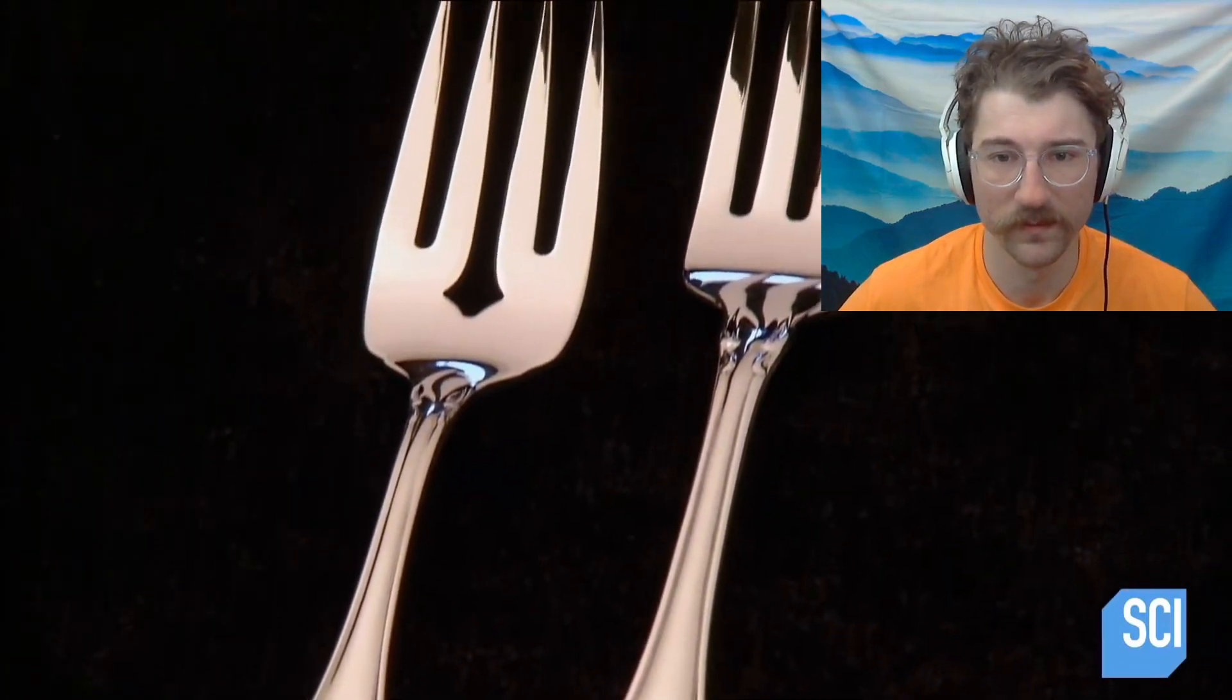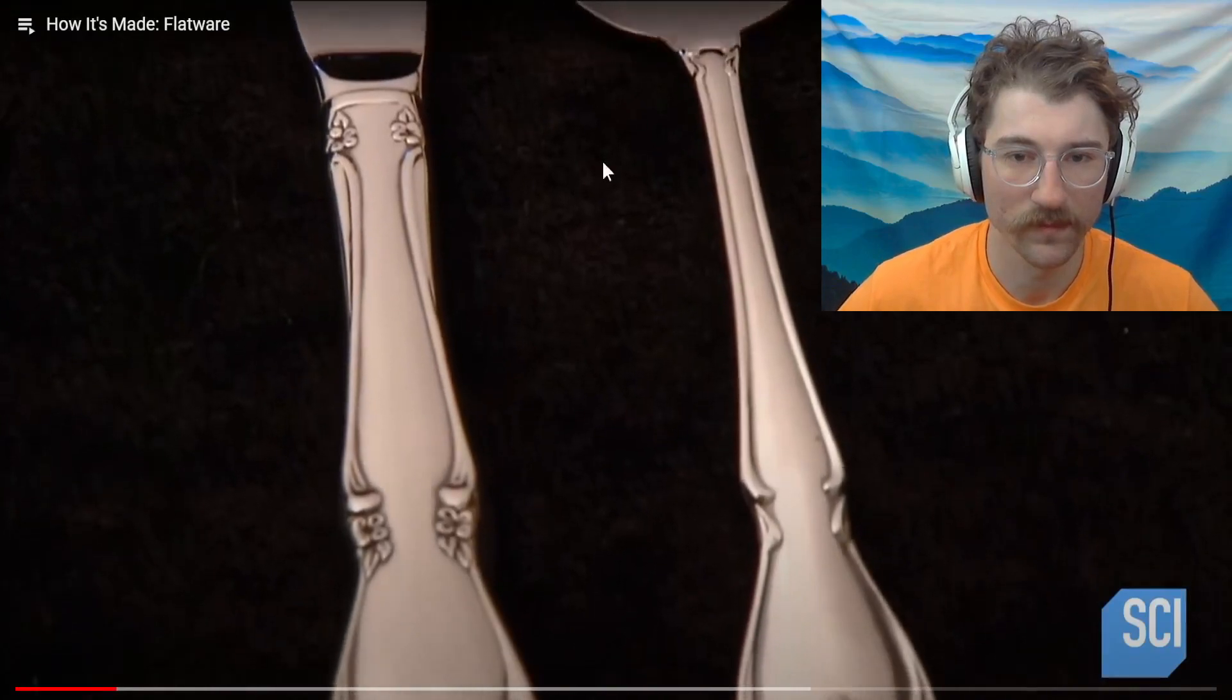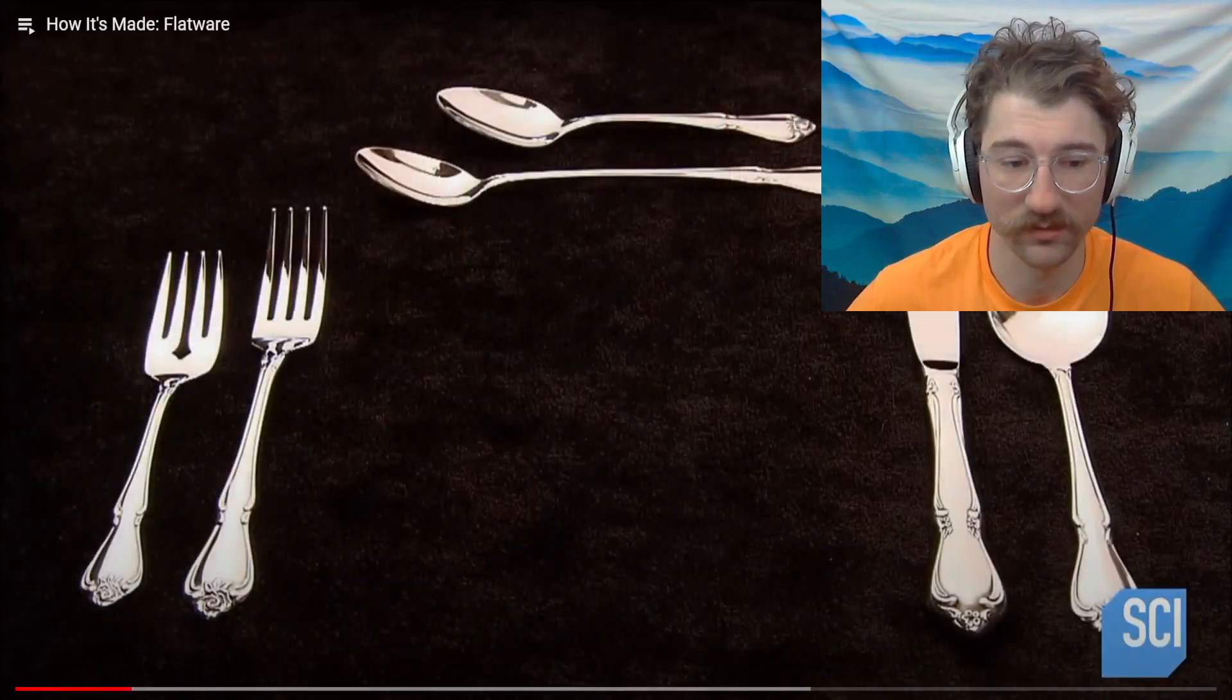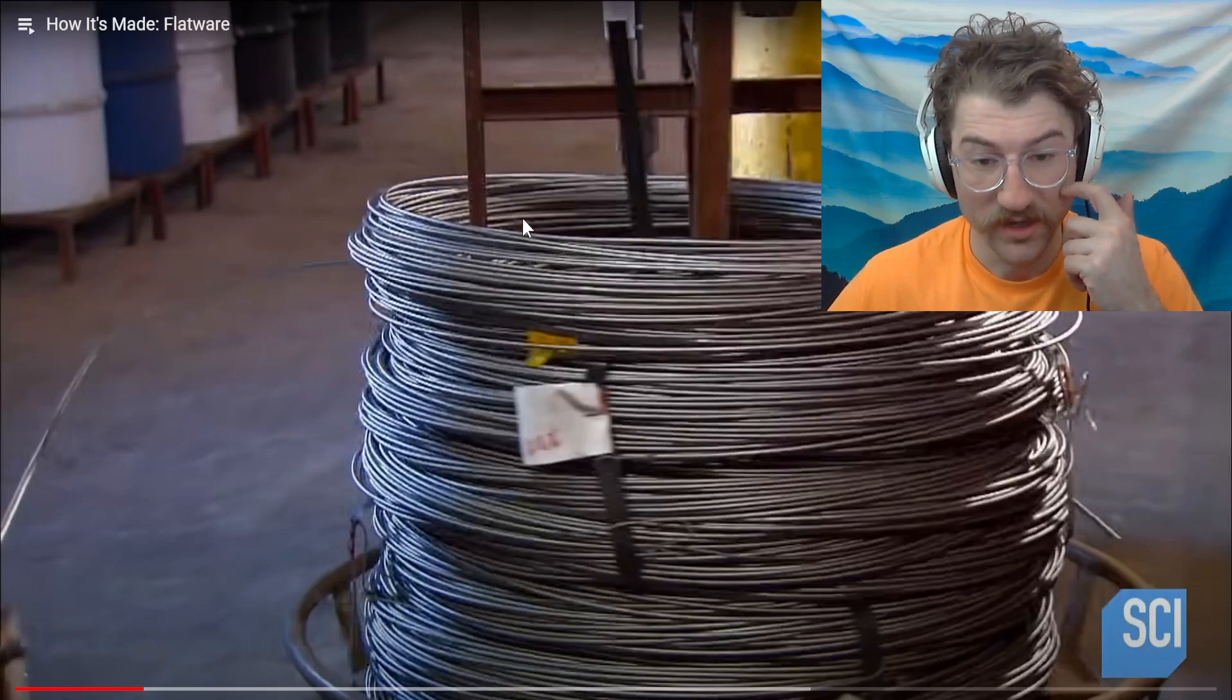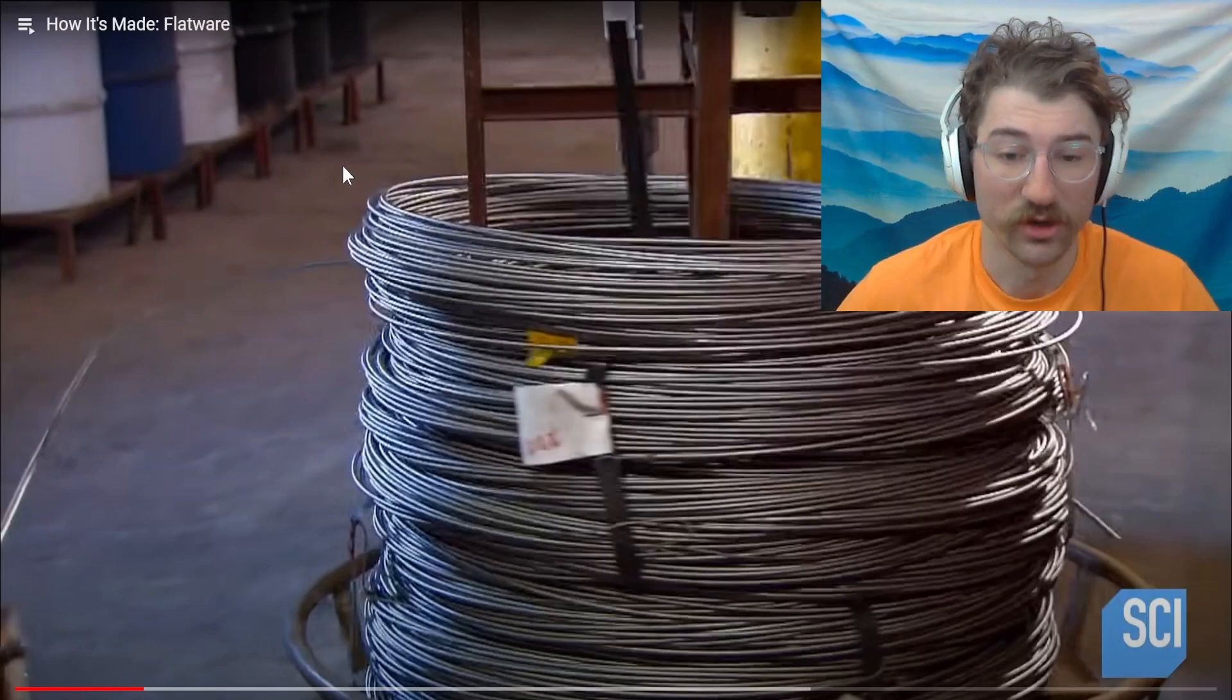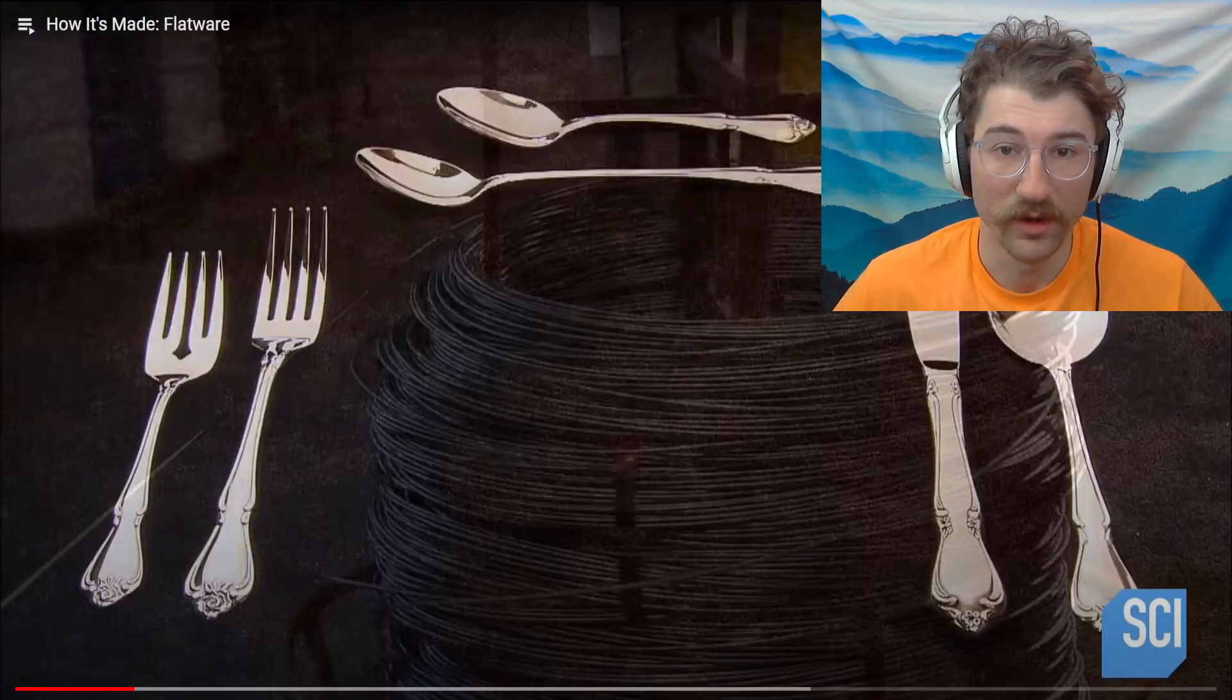Stainless steel. Stainless steel flatware is preferred by many because it's durable and doesn't tarnish over time. Yep, doesn't rust or it's not supposed to. It all begins with a thick coil of stainless steel. So depending on the grade of silverware or stainlessware, certain stainless will have nickel in it like a percentage.